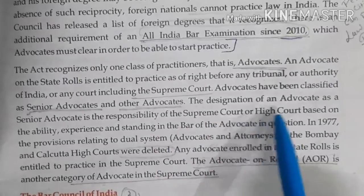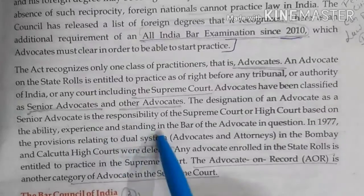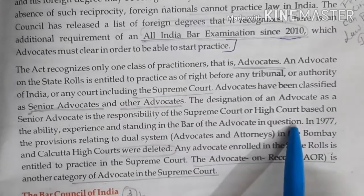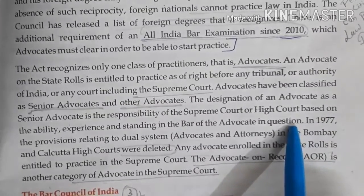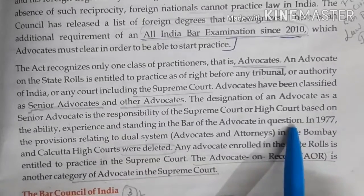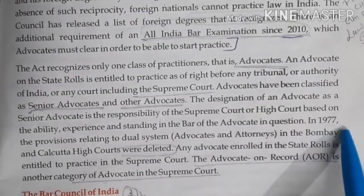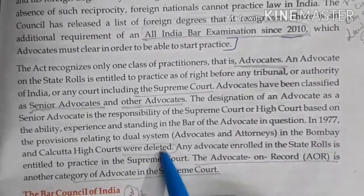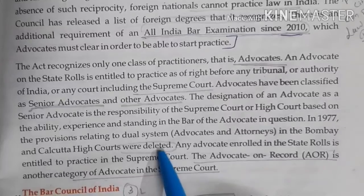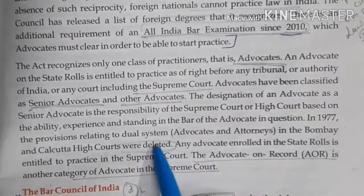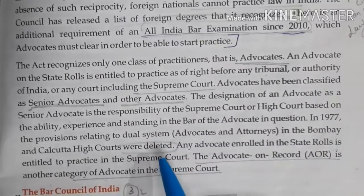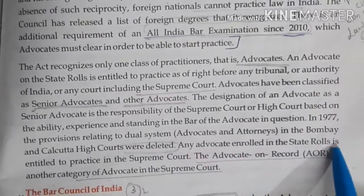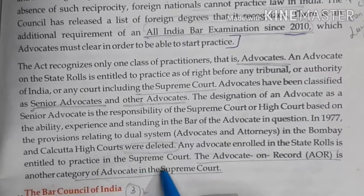The designation of Senior Advocate is the responsibility of the Supreme Court and High Courts, based on the advocate's ability, experience, and standing. An advocate working in the Supreme Court or High Court may be declared a Senior Advocate by those courts. In 1977, the dual system of Advocate and Attorney in the Bombay and Calcutta High Courts was deleted — attorneys were a category above advocates — and now only advocates enrolled in the State Bar Council are entitled to practice in the Supreme Court.